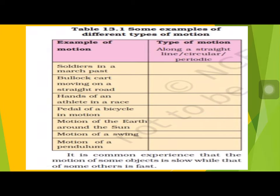For the exercise in your book, you have to write the type of motion — straight line, circular, or periodic. Soldiers in a march past: straight line. Bullock cart on a straight road: straight line. Hands of an athlete in a race: periodic. Pedals of a bicycle: circular. Motion of the Earth around the Sun: circular. Motion of a swing: periodic. Motion of a pendulum: periodic.